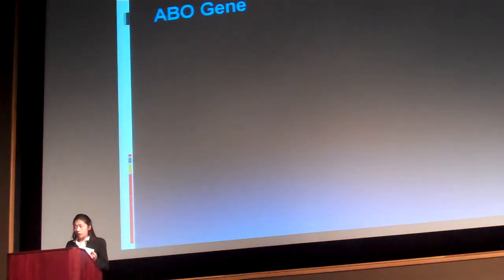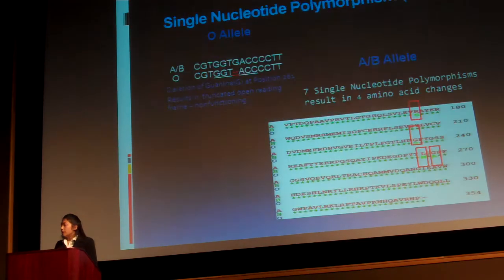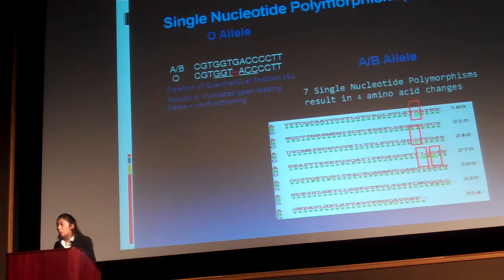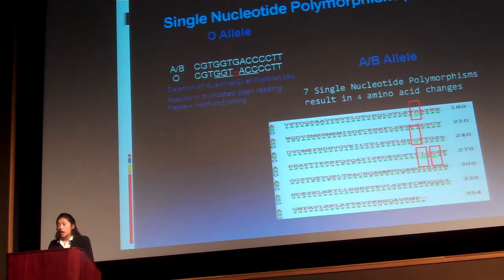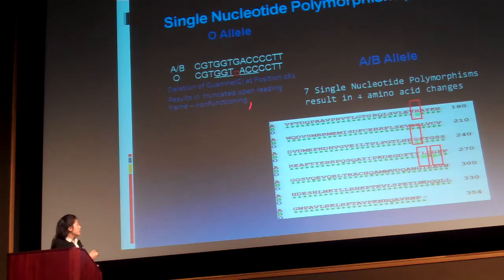Now some background on the ABO gene itself. The ABO gene is on chromosome 9, on exons 6 and 7. The O allele lies on exon 6, and the A and B alleles lie on exon 7. To differentiate between the A/B allele and O allele, there is a single nucleotide polymorphism — a deletion at guanine at position 261 — resulting in a frameshift that renders the O allele non-functioning. To differentiate between the A and B alleles, there are seven single nucleotide polymorphisms resulting in four amino acid changes. We use a restriction digestion enzyme that finds the specific sequence for an allele and cuts it to identify it in the final gel.